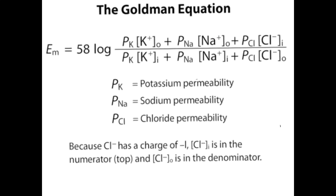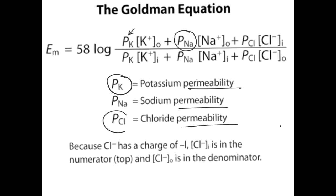Goldman's equation is just the combination of many Nernst equations taking the permeability of ions into consideration. The term PK means permeability of potassium, PNa means permeability of sodium, and PCl means permeability of chloride. Here you can see that chloride inside is in the numerator, because chloride has a charge of minus 1, and so the ratio of chloride outside to inside is inverted.